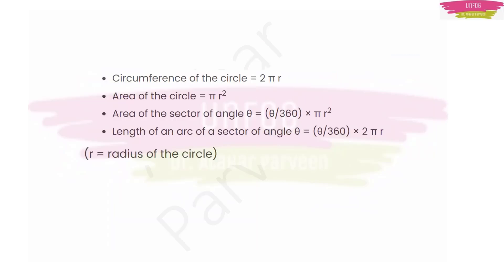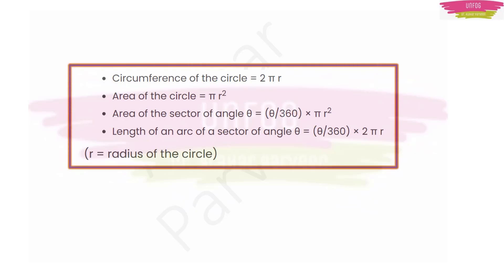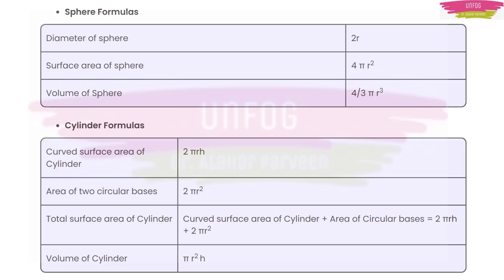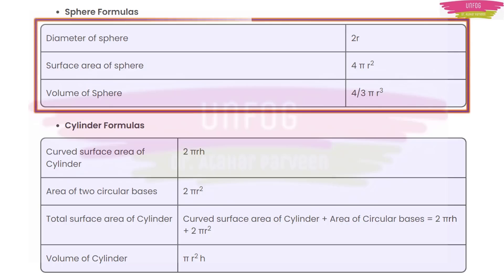Then we have these formulas from circle. Circumference of circle is 2πr, area of circle is πr². And for a sector, if you have angle θ, then you have area is equal to (θ/360) × πr². You can also find the length of an arc of a sector, which is having angle θ. It is (θ/360) × 2πr. Of course, r is the radius of the circle.